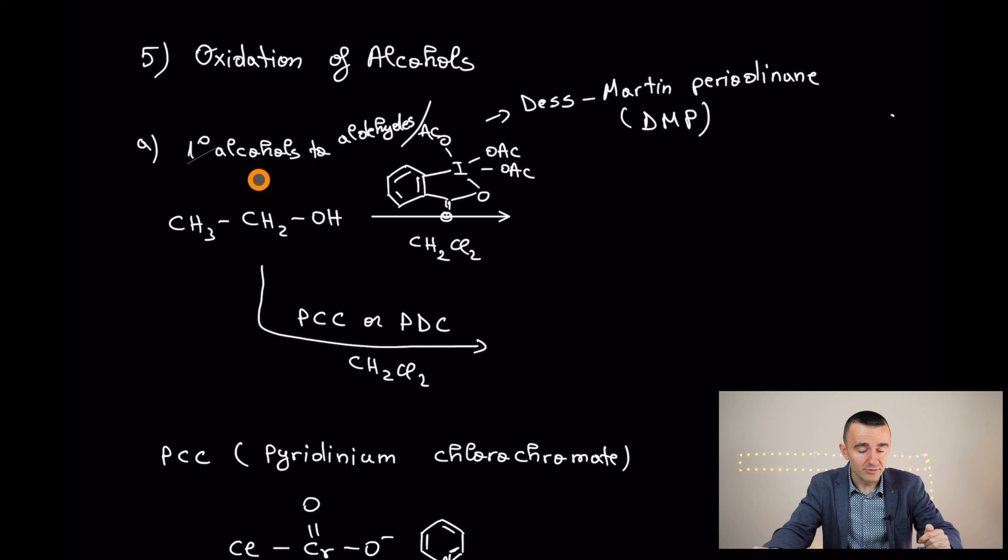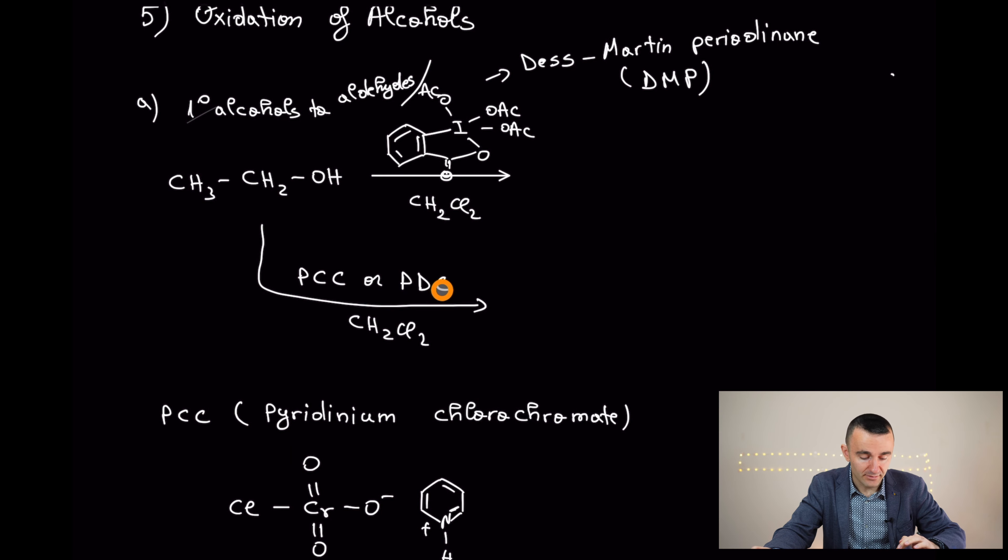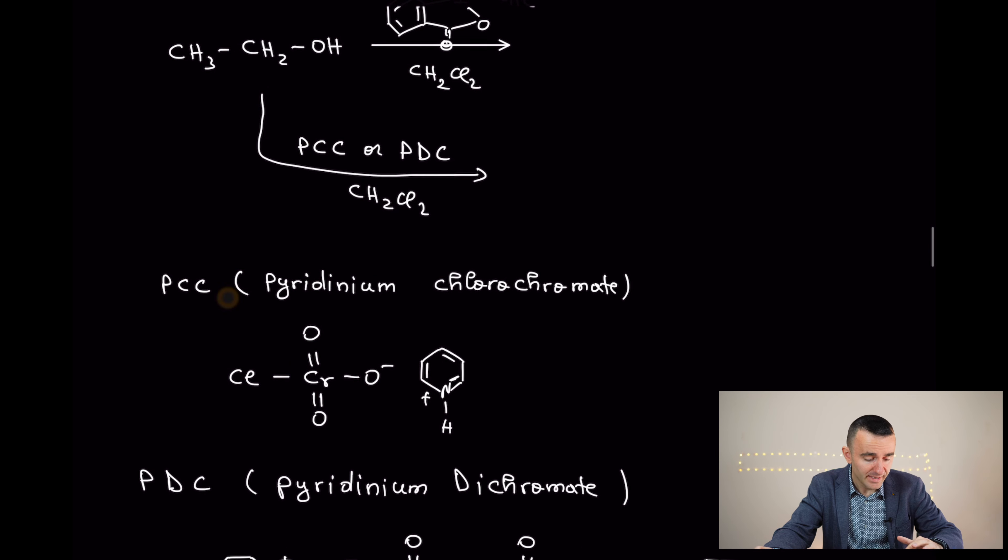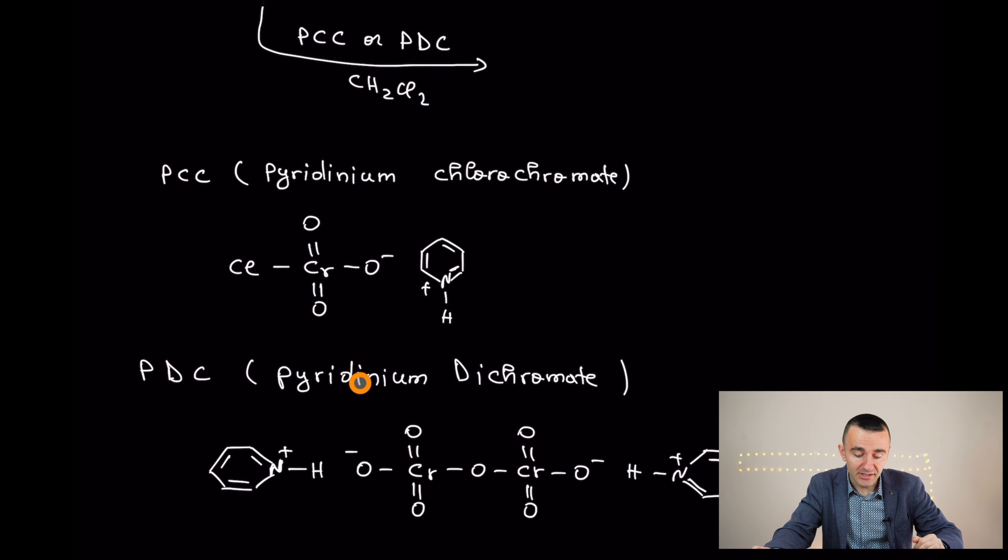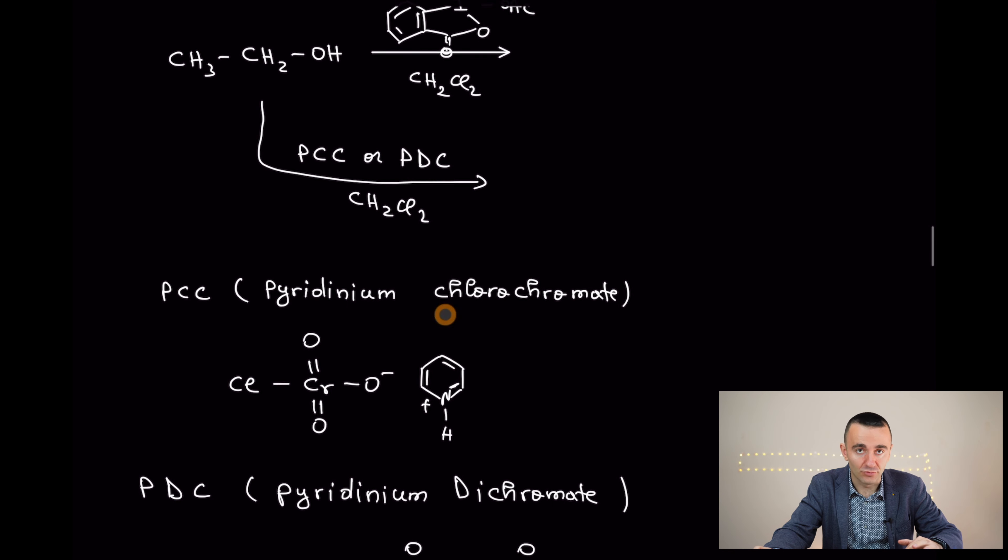So let's move first to the point A that is with primary alcohols. With primary alcohols, you can oxidize them to aldehydes or carboxylic acids. If you want to stop to aldehydes, you're going to use a soft oxidizing agent. We can say like that. The first one, because different books have different reagents, but these are the three typical ones. Dess-Martin periodinane, DMP. This compound here, you can remember it as periodinane or DMP in dichloromethane. PCC or PDC, one of them, not both of them, in dichloromethane again. What are they? PCC is pyridinium chlorochromate. It's this structure here. PDC is pyridinium dichromate. Both those oxidizing agents are soft oxidizing agents and are used to stop the reaction to the aldehyde.